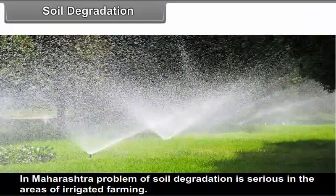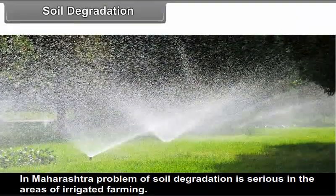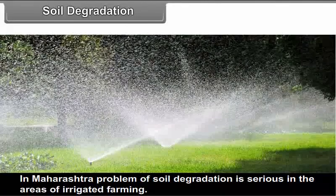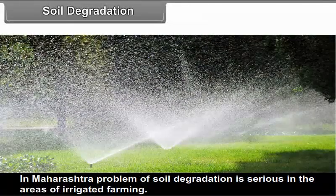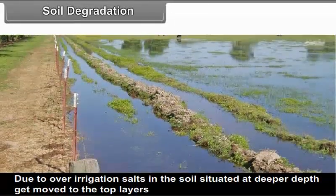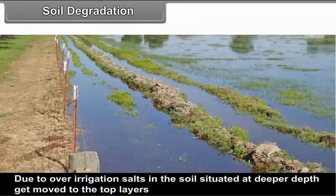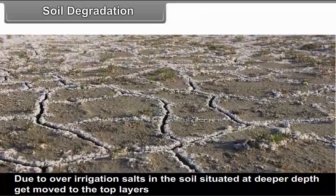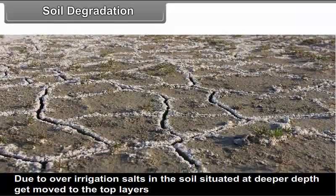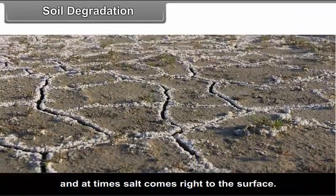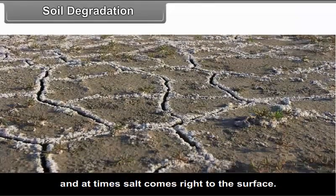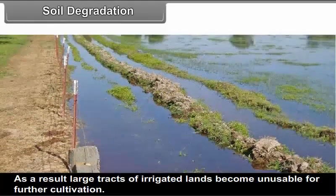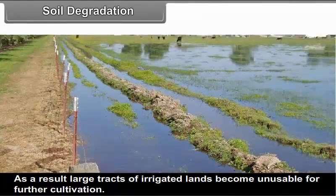Soil degradation: Decline in the fertility status of a soil is termed soil degradation. This is an effect of excessive utilization of soils, over-irrigation, excessive use of chemicals, fertilizers, etc. Rotating crops, keeping the land fallow for some period of time, and use of organic manures are some of the measures suggested to counter the problem of soil degradation. In Maharashtra, the problem of soil degradation is serious in the areas of irrigated farming. Due to over-irrigation, salts at deeper depths move to the top layers, and at times salt comes right to the surface, making large tracts of irrigated lands unusable for further cultivation.